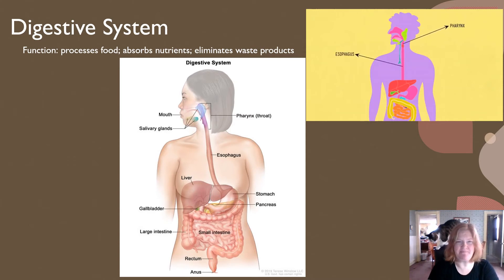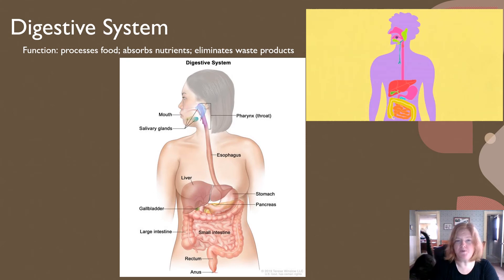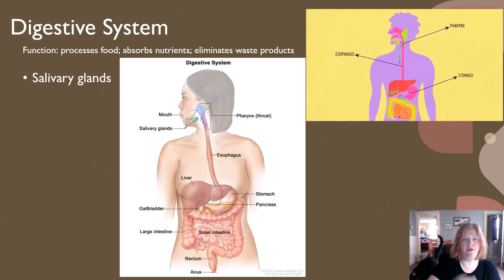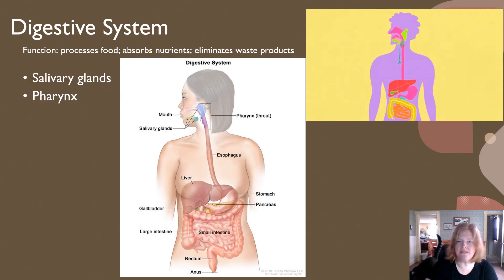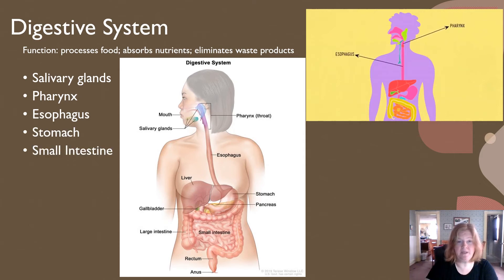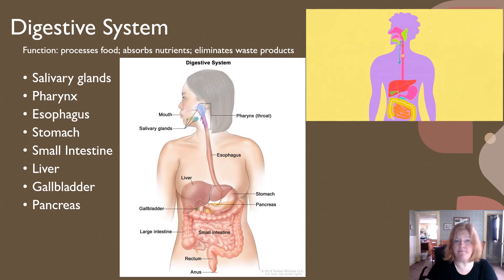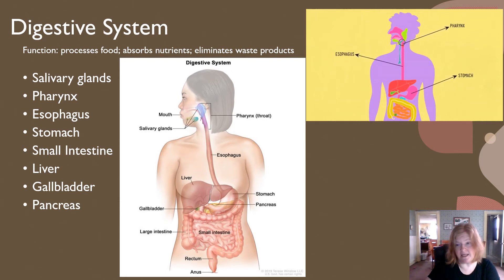Then we have the digestive system. The digestive system processes food, absorbs nutrients, and eliminates waste products — it's basically one long tube. It includes the salivary glands, the pharynx, the esophagus, the stomach, the small intestine, the liver, gallbladder, and pancreas, which are accessory organs — food doesn't move through those, but they do provide necessary enzymes. And then the large intestine.